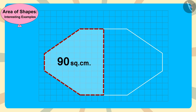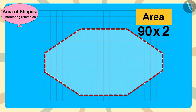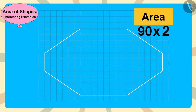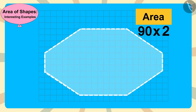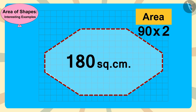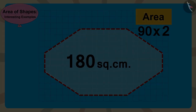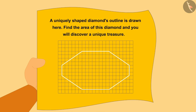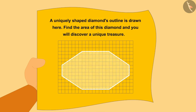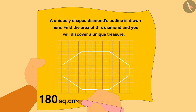We then multiply 90 by 2 to find the area of the entire diamond. In this way, the area of this diamond is 180 square centimeters. Chanda too found the answer to this puzzle and wrote the area of the diamond as 180 square centimeters.